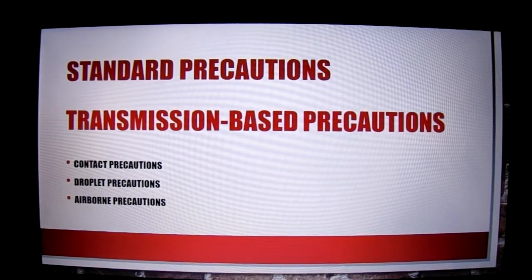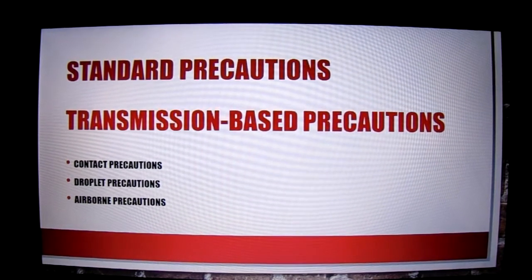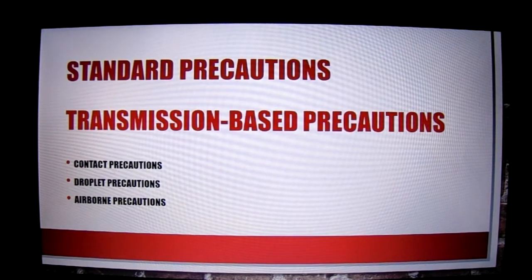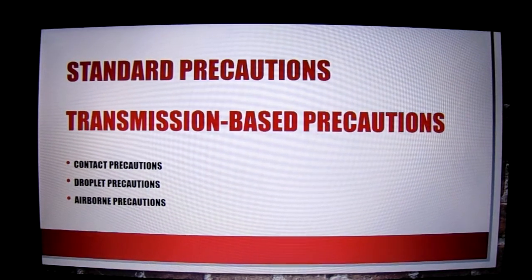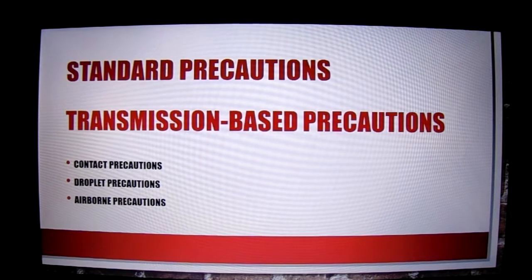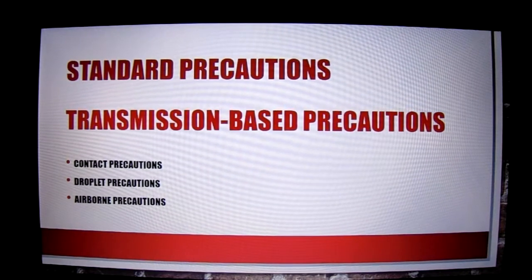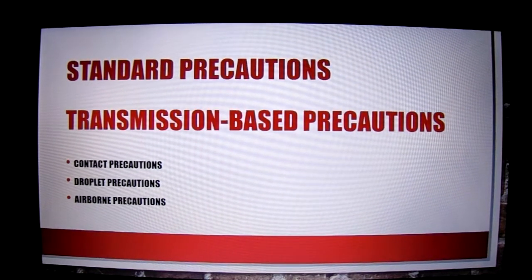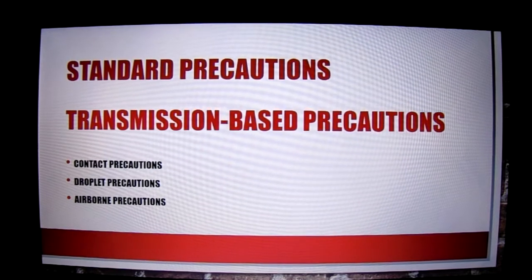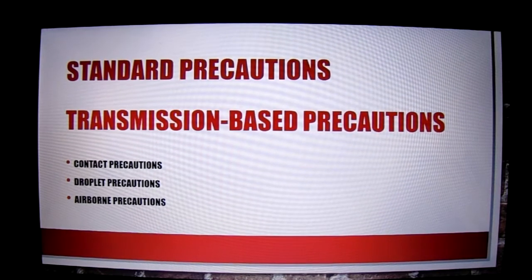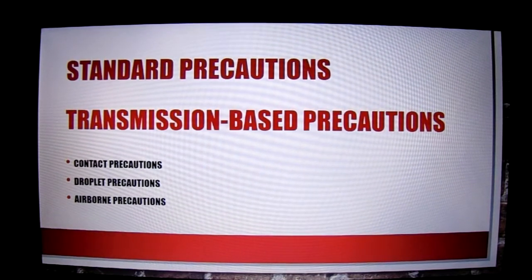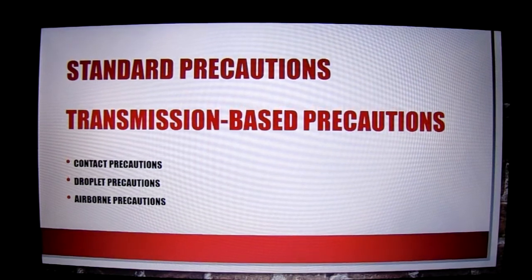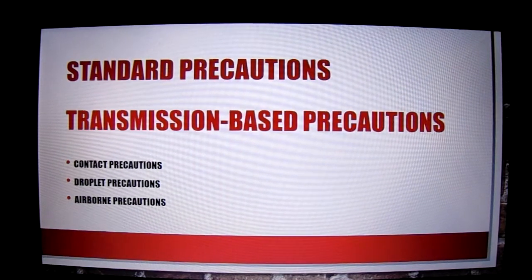Airborne precautions are put in place when the droplets are so small they can be transmitted through the air. Airborne precautions would be useful for infections such as tuberculosis. PPE would require gown, gloves, and face masks, which might be a specialized face mask for the type of infection, such as an N95 mask or a HEPA filter system.